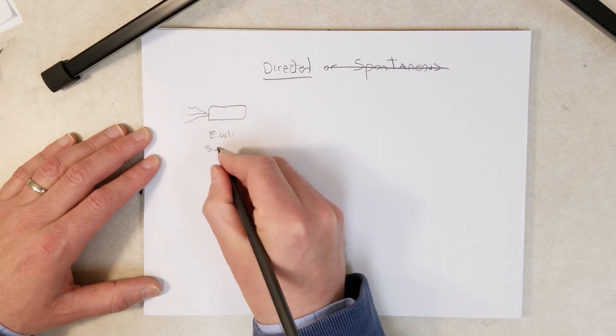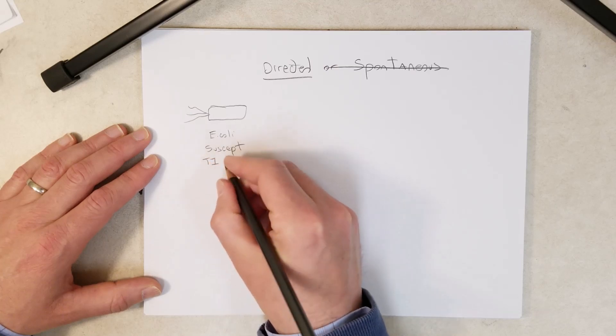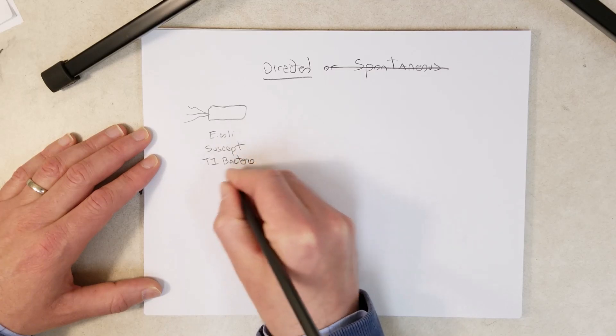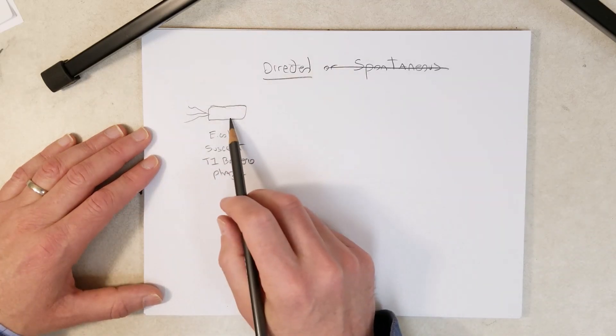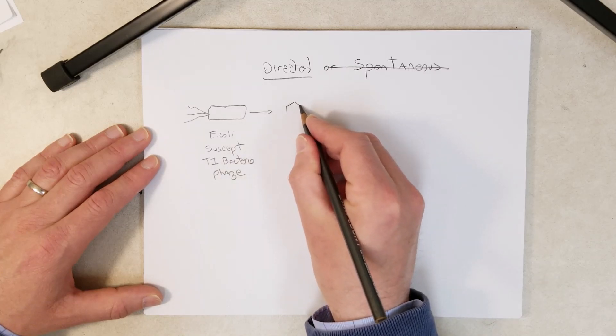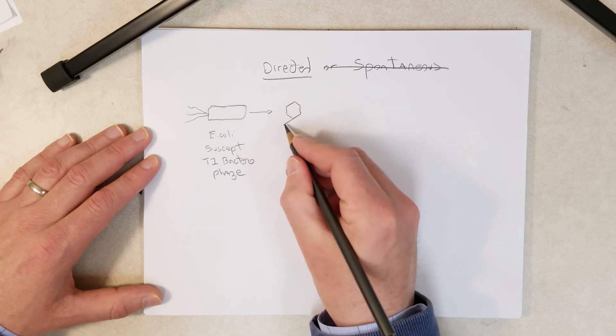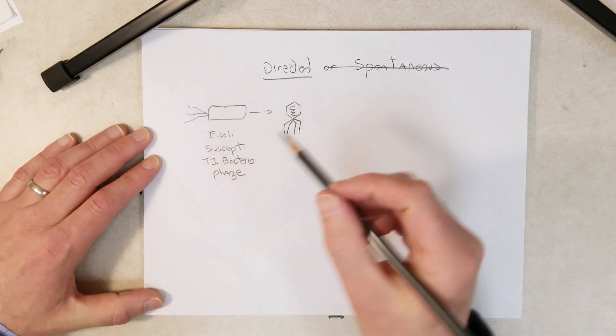Let's say this is E. coli and it is a cell that is susceptible to bacterial infection by T1 bacteriophage - that's just a virus. Bacteriophage is a fancy term for a virus that infects bacteria. We're using a strain of E. coli that is susceptible to infection with a bacteriophage called T1. Now let's say this E. coli cell is swimming around in the environment and comes into contact with that bacteriophage.